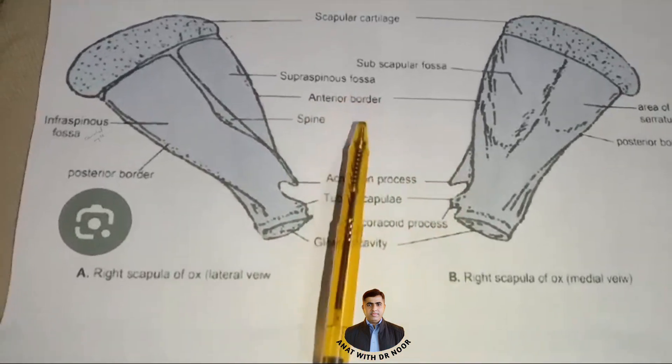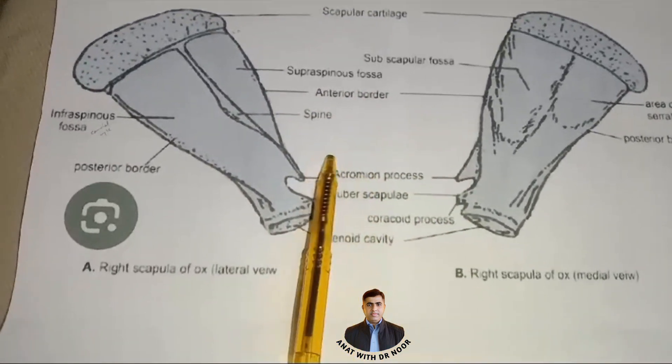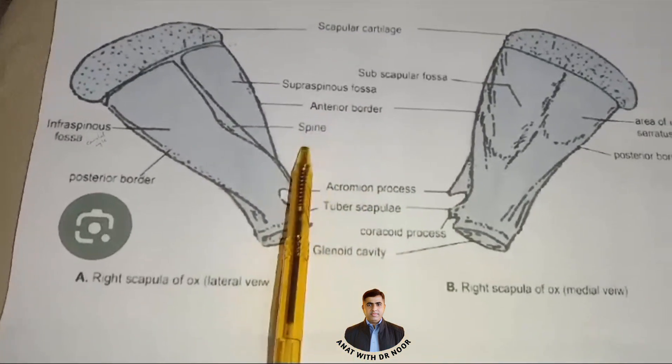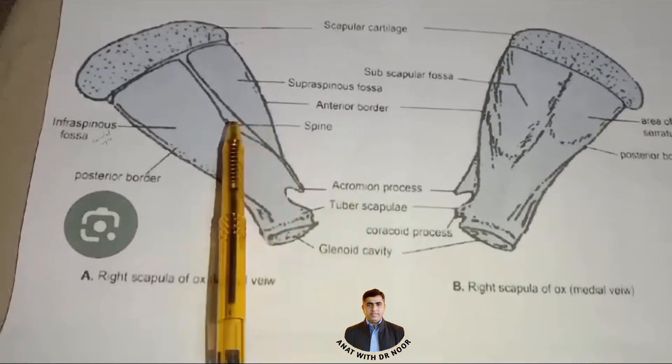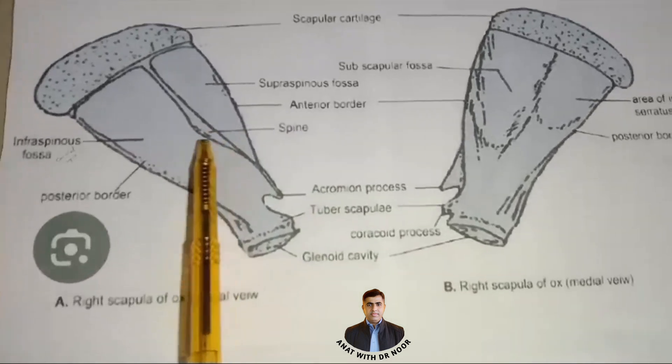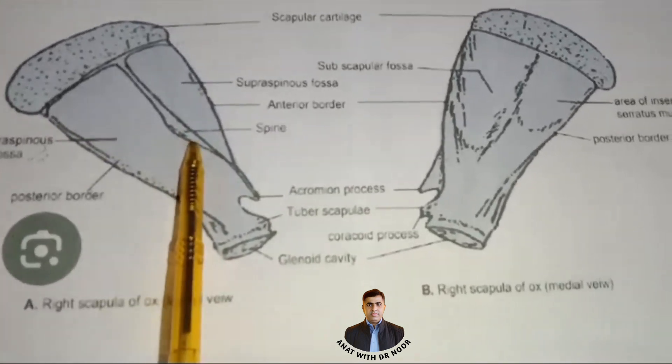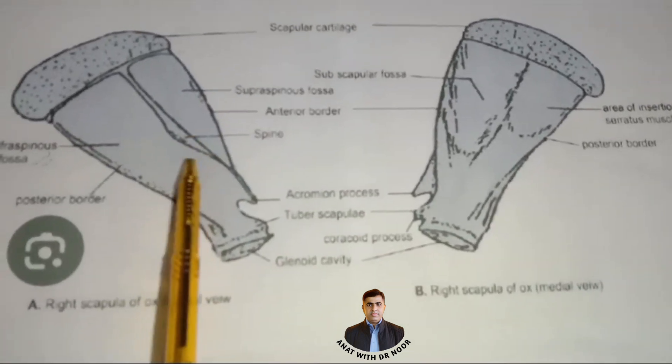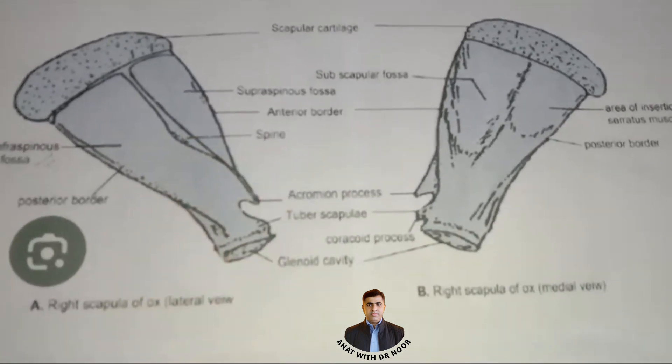Fossa ka matlab hota hai depression. Scapula spine ke midst se ye backward bend hota hai. Us spine ko hum kehte hain tuber of scapular spine.